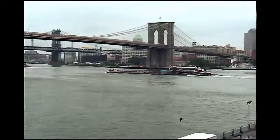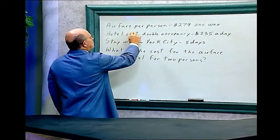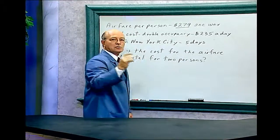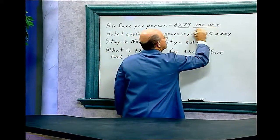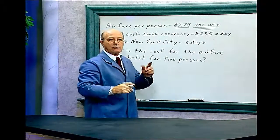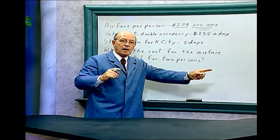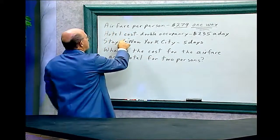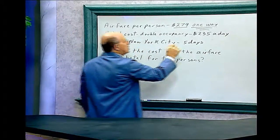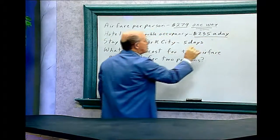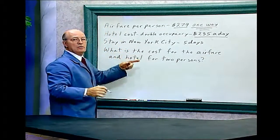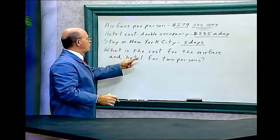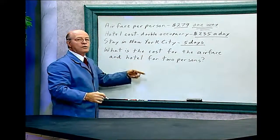Let's do the math. The airfare per person is $279, but notice it's one way, not for round trip. That means you pay $279 when you go and $279 when you come back again. The hotel cost for double occupancy is $235 a day, and you're going to stay in New York City five days. The question is, what is the cost for the airfare and hotel for two persons?